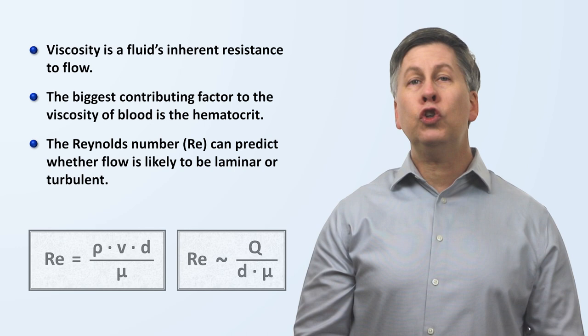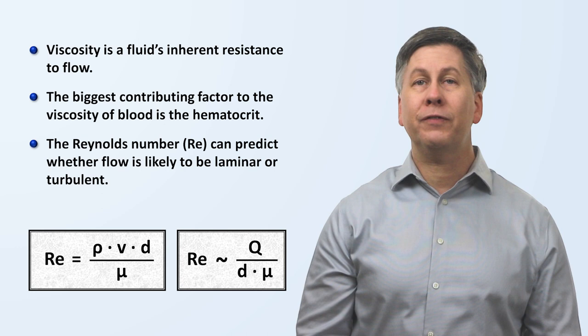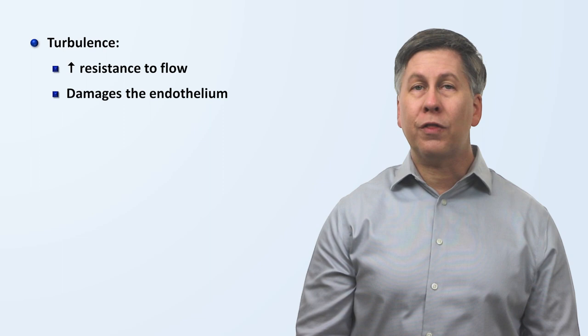The Reynolds number can predict whether flow is likely to be laminar or turbulent, and there are two related formulas for the Reynolds number that are routinely applicable in cardiovascular physiology. Turbulence increases resistance to flow, damages the endothelium, and results in murmurs and bruits.